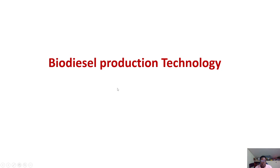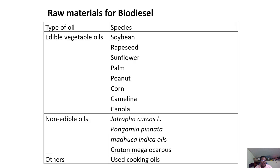Hello and welcome. Today we are looking at biodiesel production technology. These are the raw materials for biodiesel — the first column is the type of oil and the second column is the species. In the first category we have edible vegetable oils: soybean, rapeseed, sunflower, palm, peanut, corn, camelina, and canola.